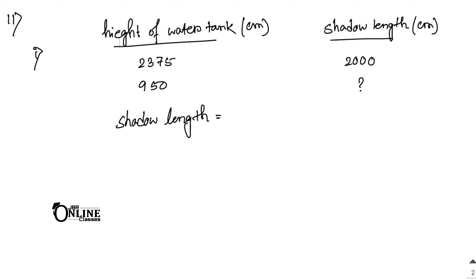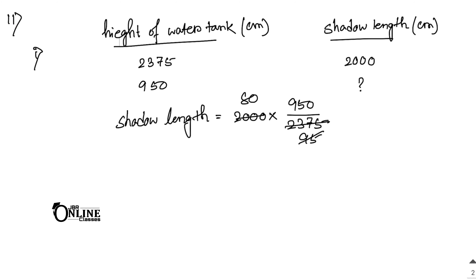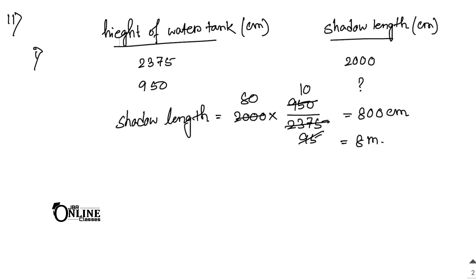Shadow length equals 2000 multiplied by 950 divided by 2375. Dividing both 2375 and 950 by 25 gives 95 and 80 respectively. So the result equals 800 centimeters, which means 8 meters. So 8 meters is the length of the shadow cast by the tree.